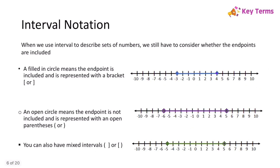Now let's talk about interval notation. In interval notation, we're also going to be thinking about whether the endpoints are included or not. If we have a filled-in circle, that means the endpoint is included and we're going to represent that with square brackets. For example, if this first number line was my domain, I would do a square bracket at negative 3 because it's included — negative 3 comma 4 — and then another square bracket because that 4 is included.